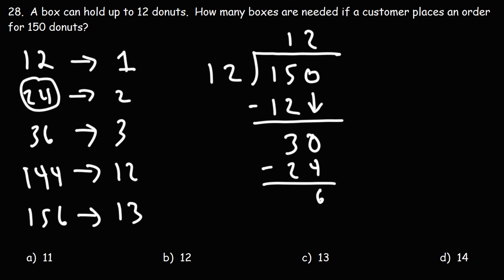Now when we get the answer 12 remainder 6, that means that 12 boxes will be filled with donuts—that's going to be 144 donuts. The 6 remaining, that's going to have to go in the 13th box. So the 13th box is going to be half filled. There's only going to be 6 donuts in the 13th box.